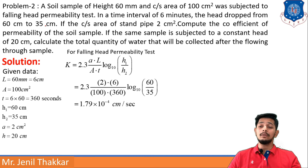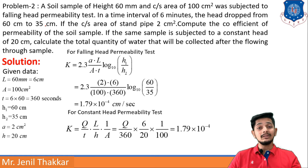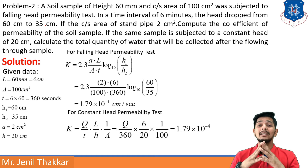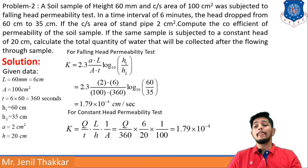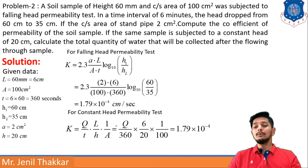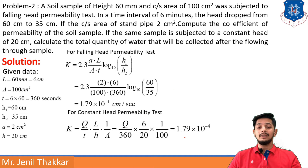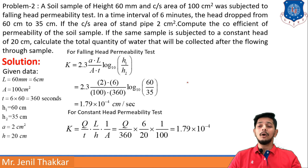Now k is known and we need to find the quantity of water. For the constant head permeability test, I use the principle that permeability of any soil stays the same regardless of which formula is used. Using the constant head formula with the known k, q = 1.79×10⁻⁴ cm/s related quantity. That's problem 2.